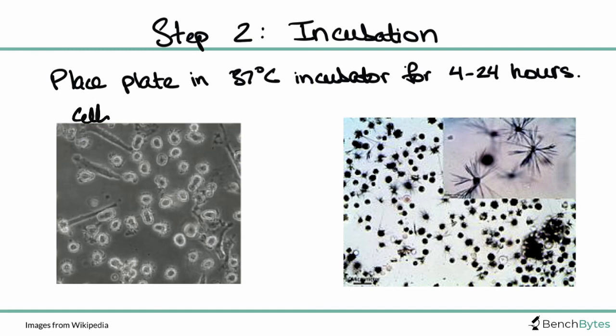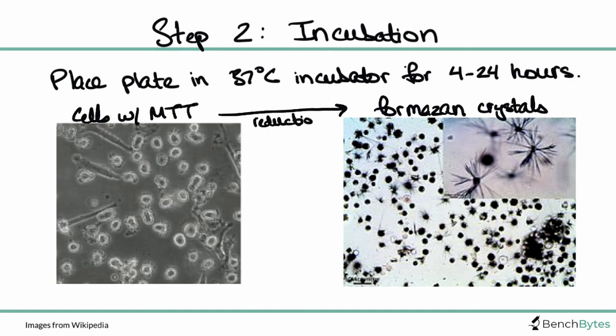Here you see that we have our cells that we started with—this is just cells with MTT. What they become after the reduction is these spiky formazan crystals that you see here. This is the reduced form and this is the form that will eventually give that purple color that we read out.